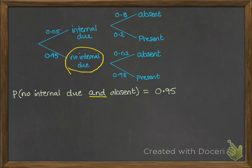We've got this 'and' as our keyword here, which means we are going to multiply. The chance of him being absent on that branch where no internal is due is 0.02. So the chance on any given day, if we pick it at random, he has no internal due and is absent, we'll find by multiplying those things together.